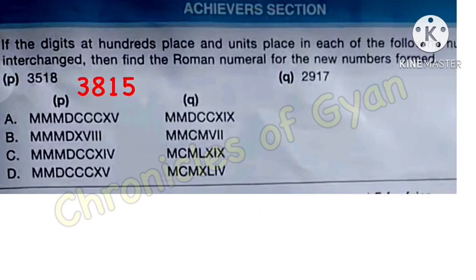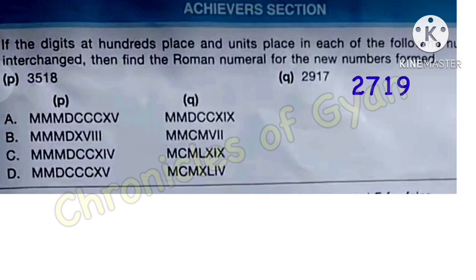Our correct option is A. Let's also check: for 2917, when hundreds and units place are interchanged, the new number is 2719. For 2719: M+M = 2000, plus D = 2500, plus C+C = 2700, plus X = 2710, plus IX = 2719. This confirms the correct option is A.